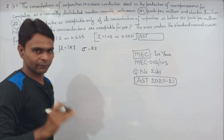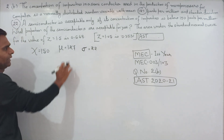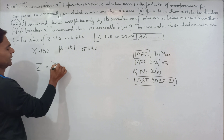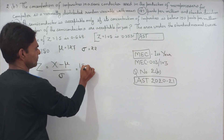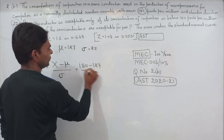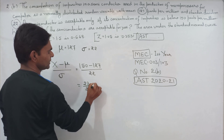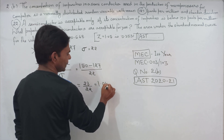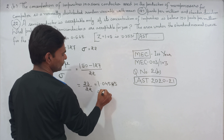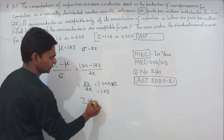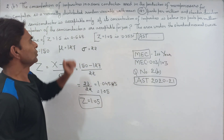Now we calculate the Z value: Z = (150 - 127) / 22 = 23 / 22 = 1.05.